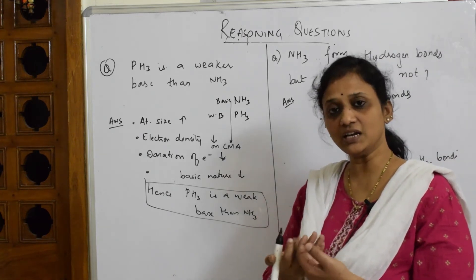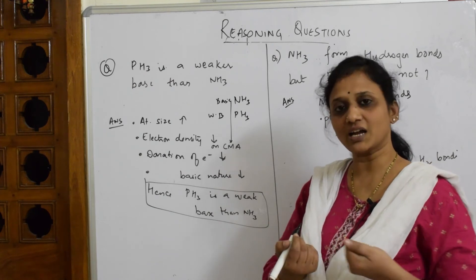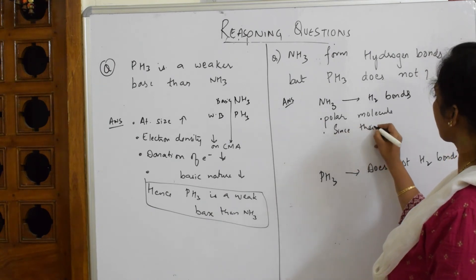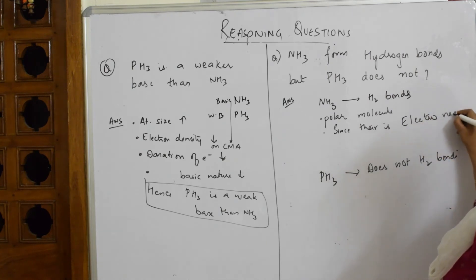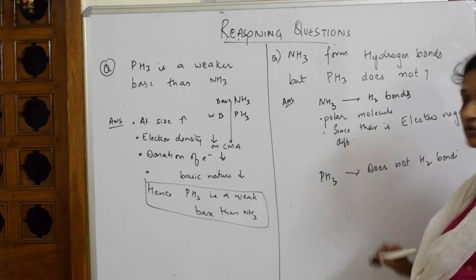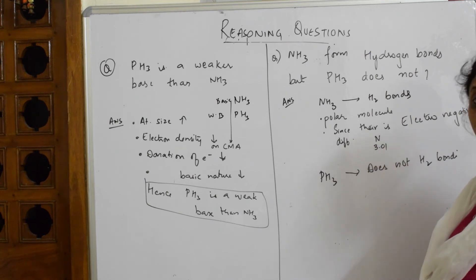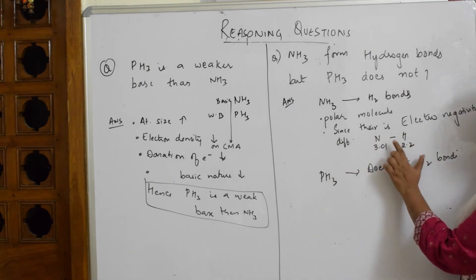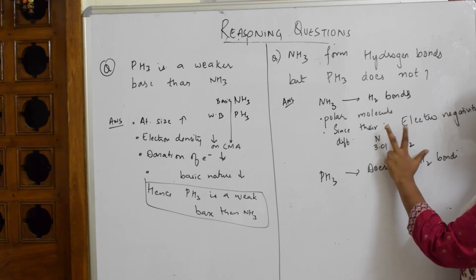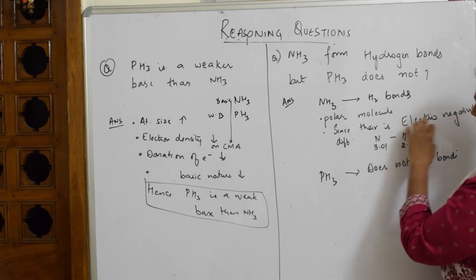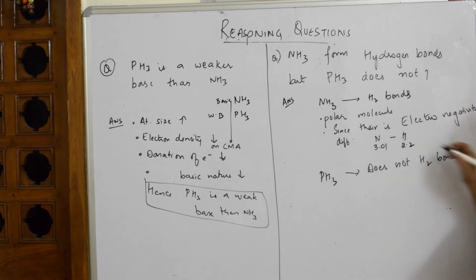When there is electronegativity difference, the one with more electronegativity tries to drag the electrons. Why is NH₃ polar? Because of electronegativity difference. The electronegativity of nitrogen is 3.01 and hydrogen is 2.2 — they are different. When there is a difference, two poles are created. One pole gets attracted to the adjacent hydrogen, which gets attracted to the next nitrogen, and it keeps forming hydrogen bonds because of the electronegativity differences.